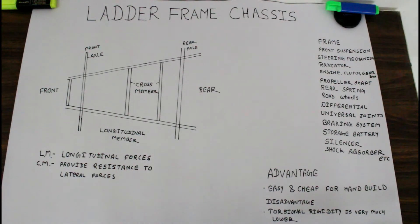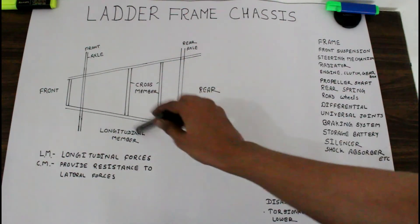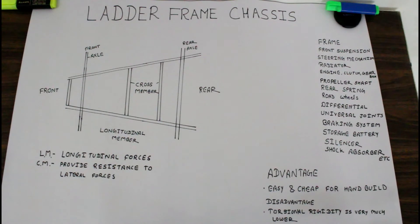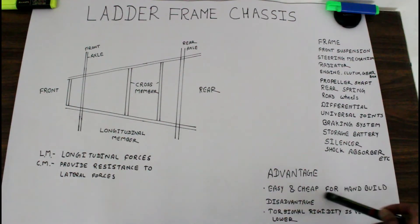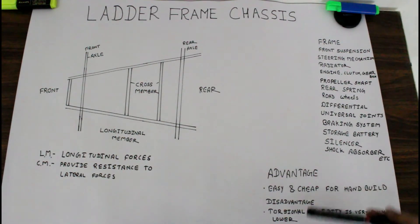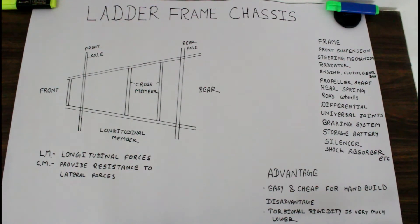This is the skeleton of our vehicle. It has advantages like easy and cheap to handle, and disadvantages like torsional rigidity is very much lower, especially when our vehicle comes in contact with bumps or dumps.